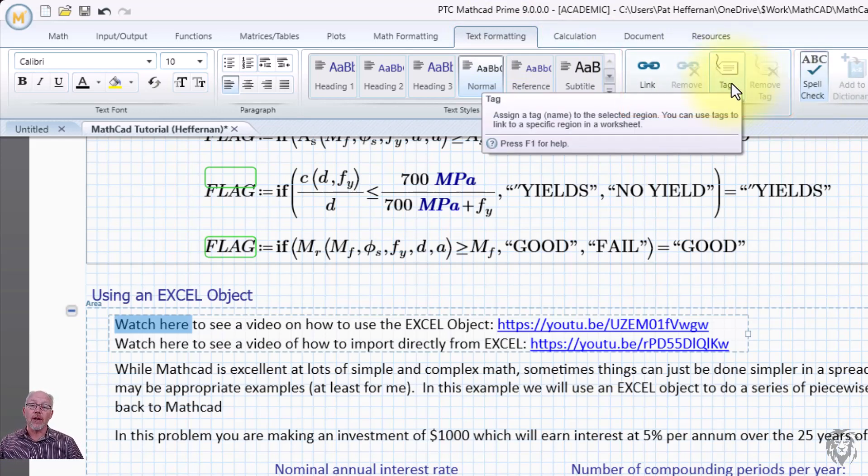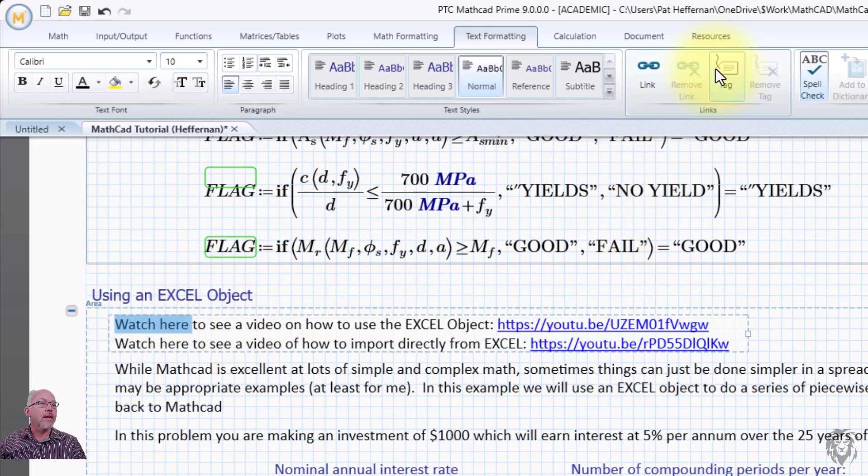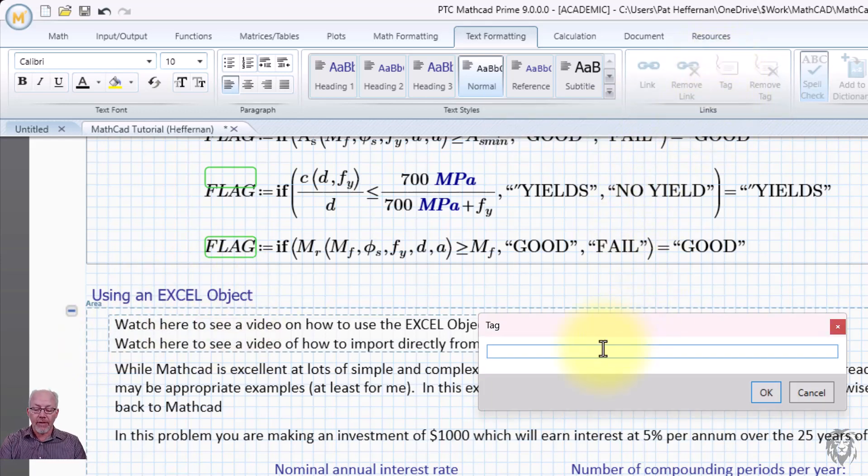So in order for us to have an internal hyperlink, we have to add a tag. And so that's why we're starting where we want to link to. So I've chosen those two words and I'm going to choose to tag them. And now we give the tag a name and I'm just going to call it in this case, Excel object. I'm going to hit okay.